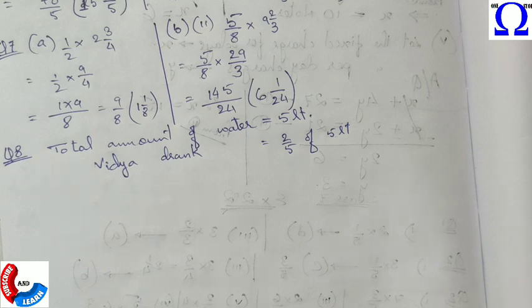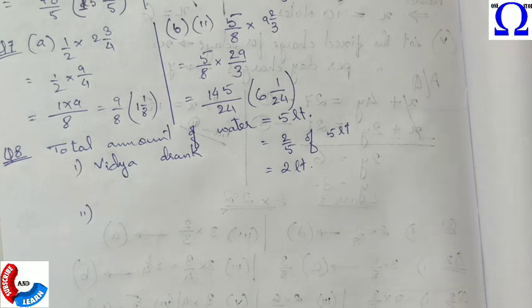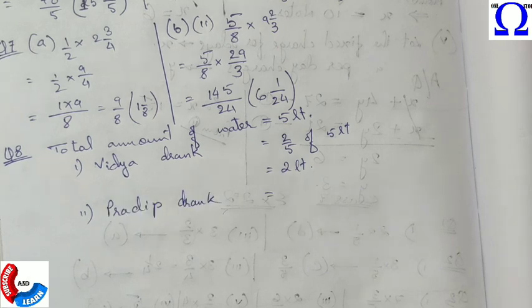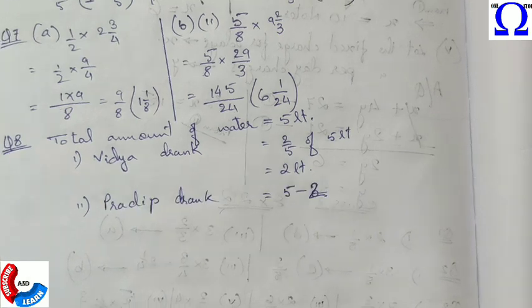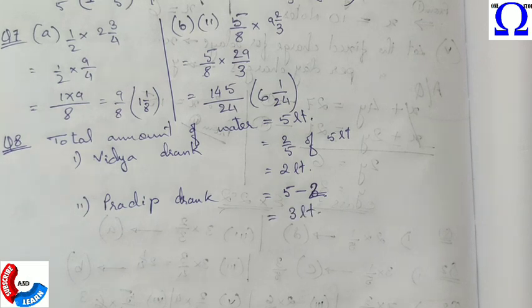So 2 by 5 of total amount, that is 5 liters, which is the answer for the first part. The second part asks about Pradeep. Pradeep will drink the rest of the water, so how much is left? That is total minus Vidya's part, which is 3 liters. This is the required answer.